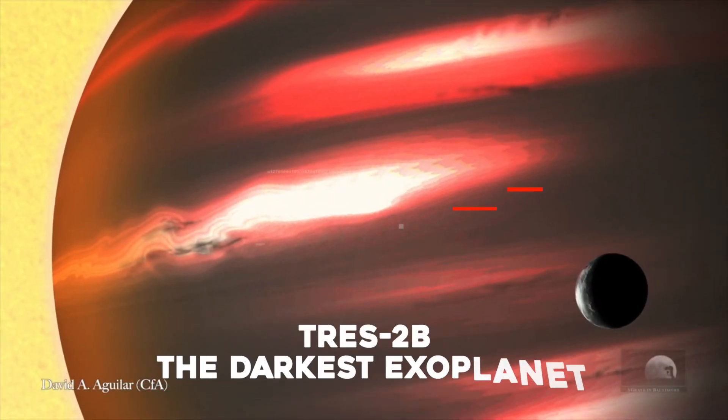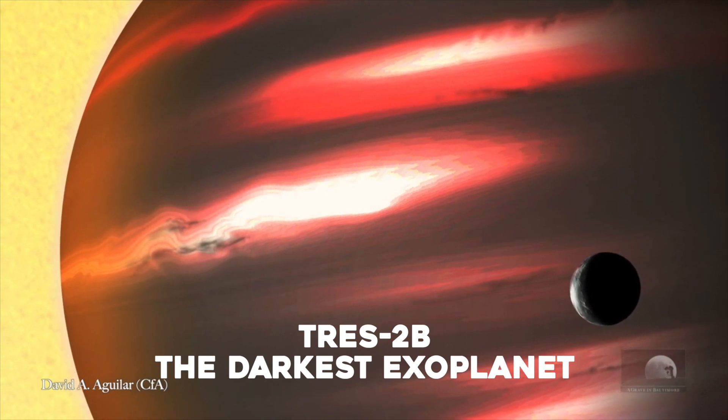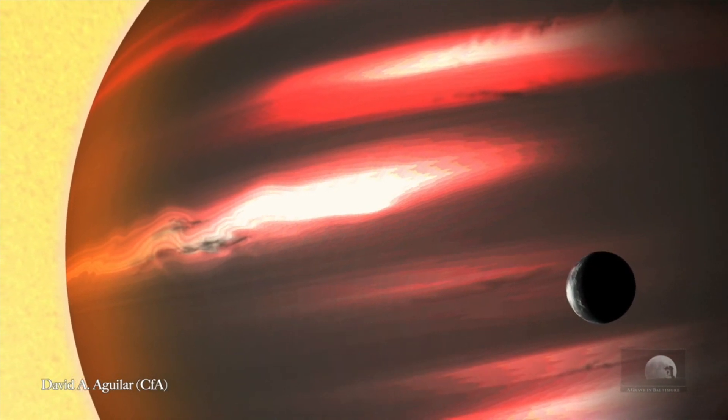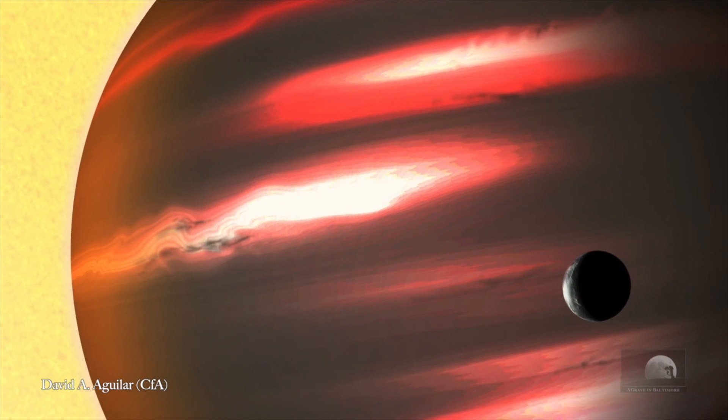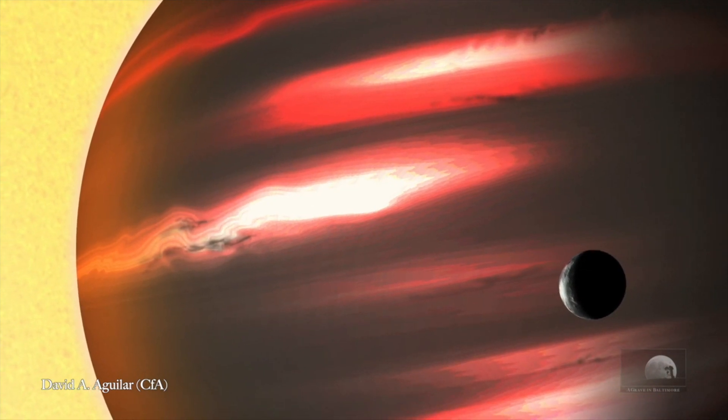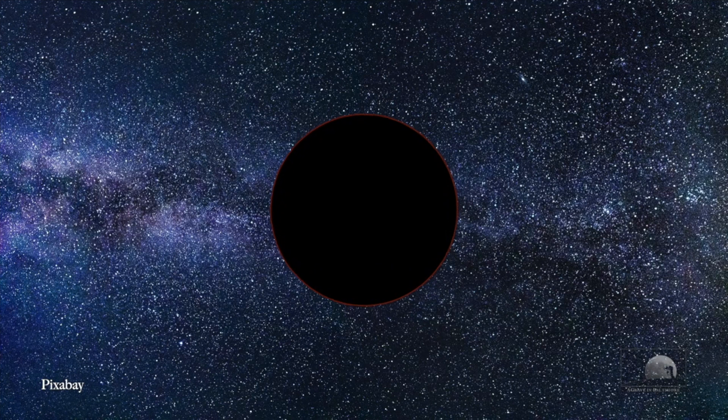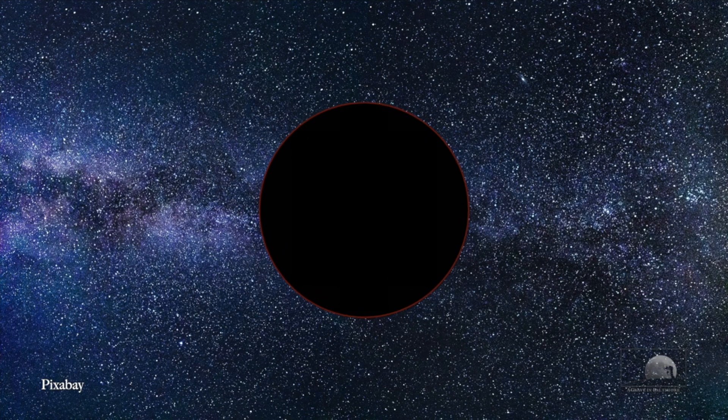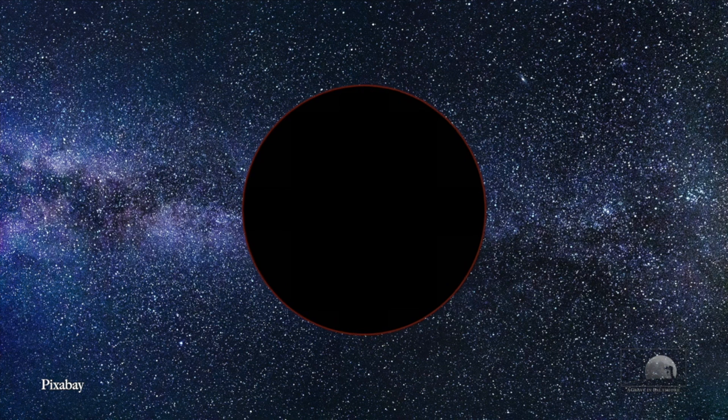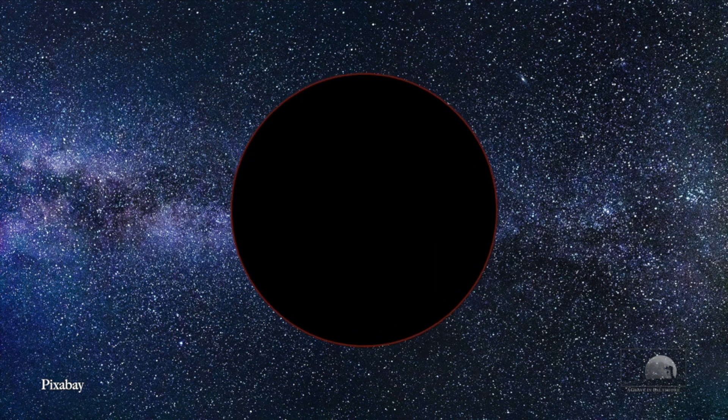Tres-2b – The Darkest Exoplanet. It's so black, you can hardly make out its shape. Light just seems to fall into it. Hitchhiker's Ford Prefect may have been describing hot black Desiato's limo ship, but he could just as easily have been talking about Tres-2b.